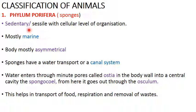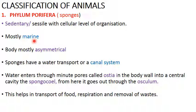The first point about Porifera is that they are sedentary — another term is sessile — meaning they don't move from their place. Their body is made of just a cluster of cells, so they have a cellular level of organization; no tissues are present. Mostly they are marine, living in sea water. One example, Spongilla, is a freshwater sponge. The body is asymmetrical — it cannot be divided into two equal halves. A characteristic feature is that they have a canal system.